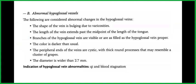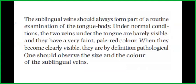The indication of hypoglossal vein abnormalities is qi and blood stagnation. The sublingual veins should always form part of a routine examination of the tongue body. Under normal conditions, the two veins under the tongue are barely visible and have a very faint pale red color. When they become clearly visible, they are by definition pathological. One should observe the size and the color of the sublingual veins.